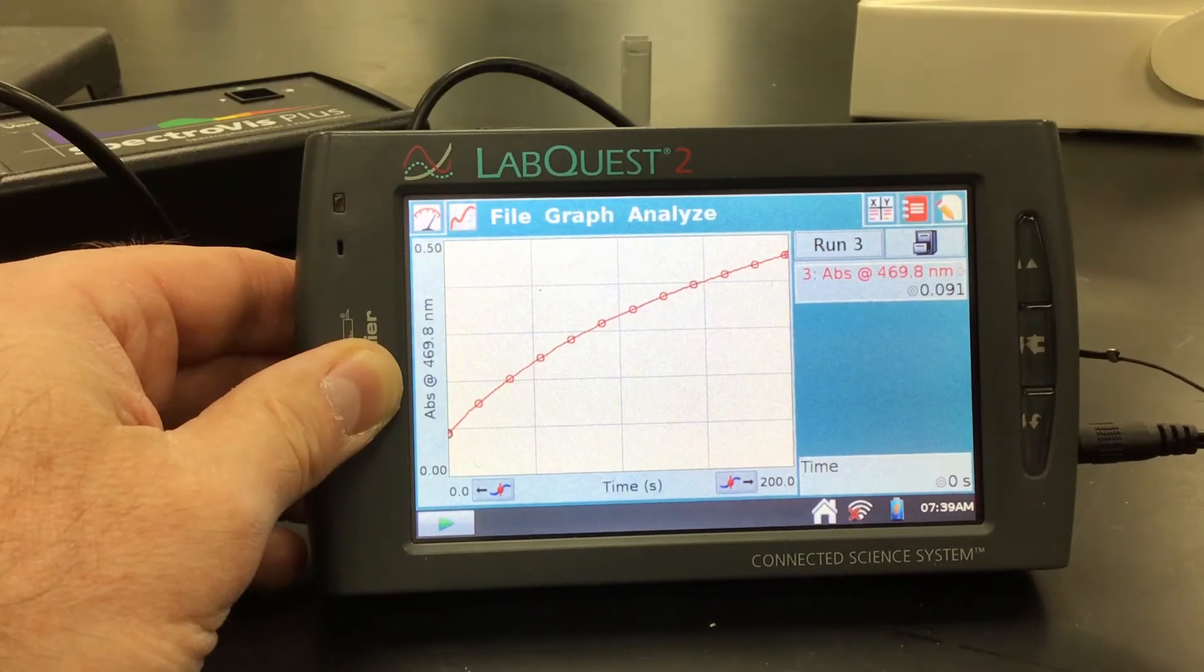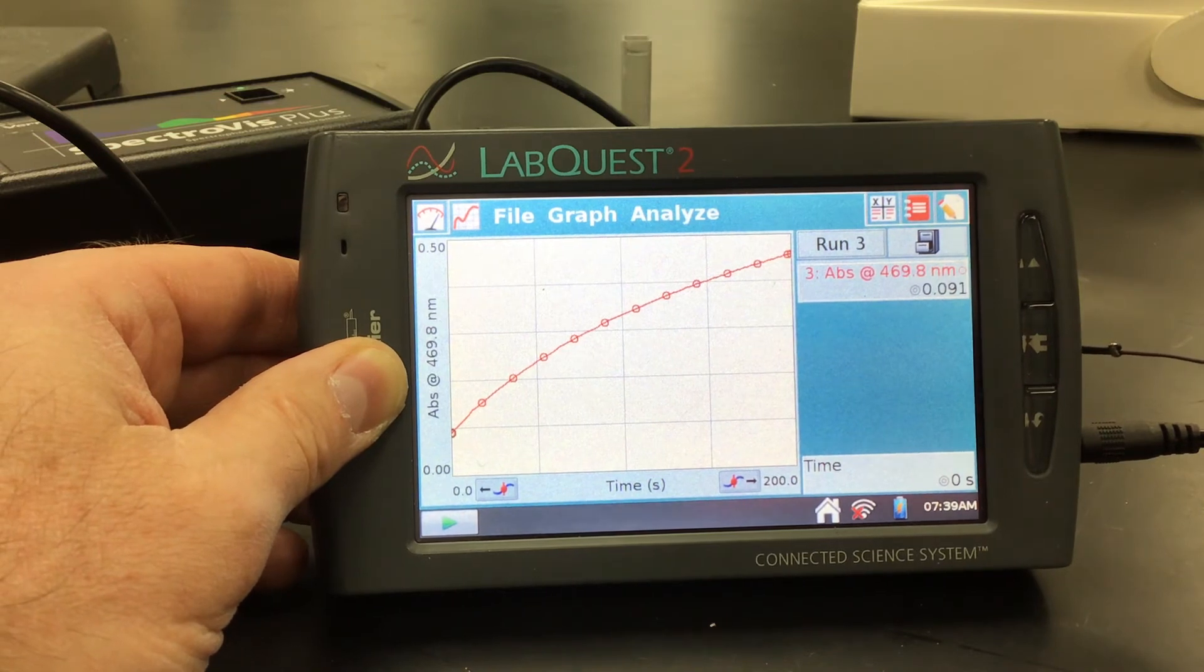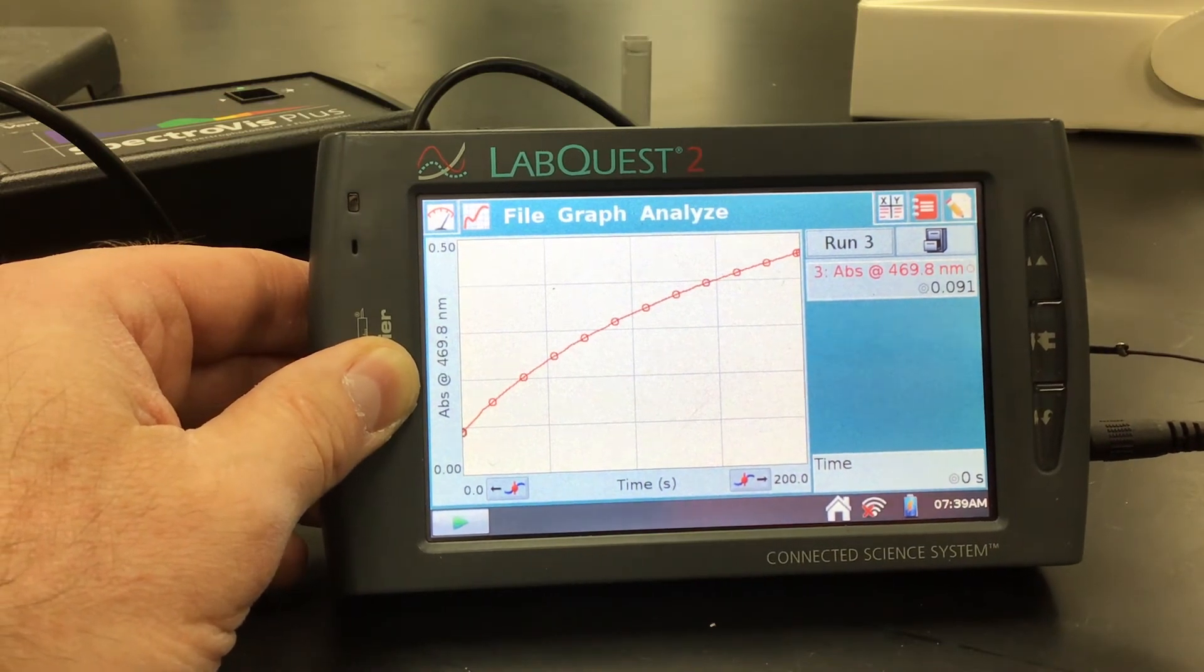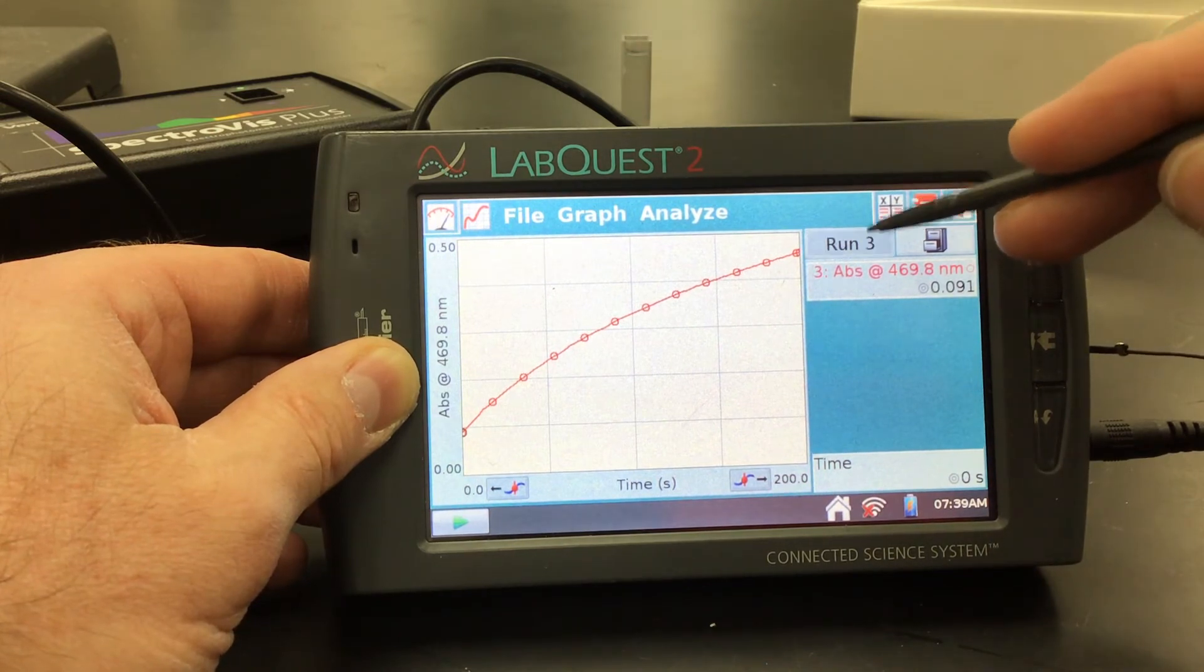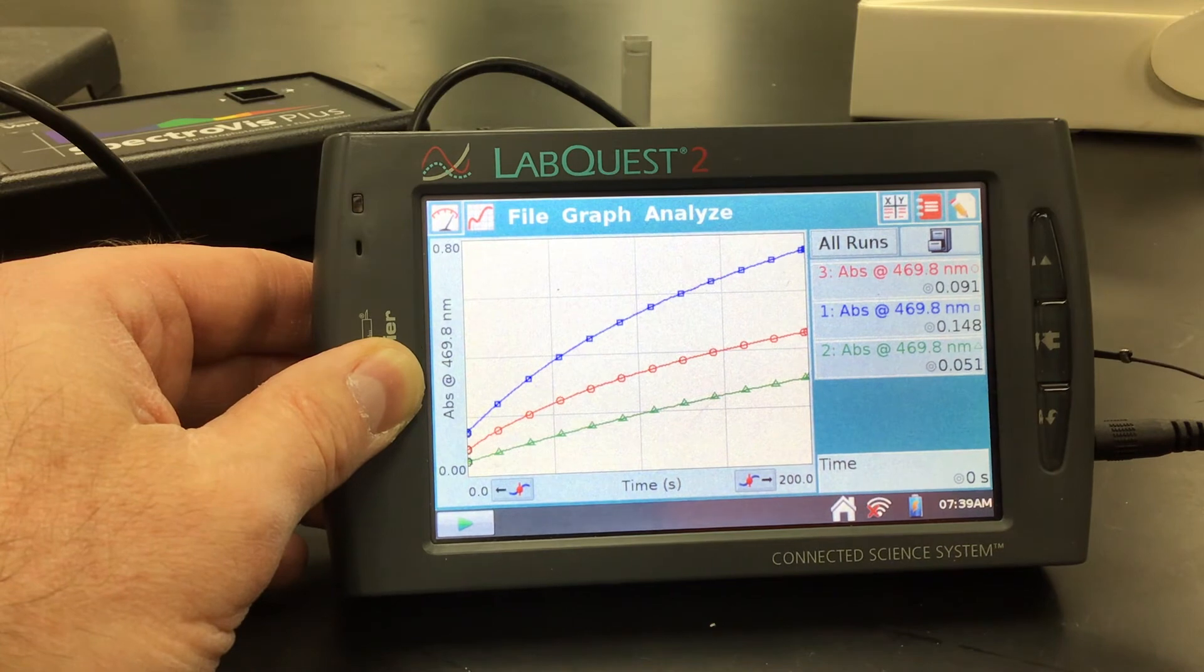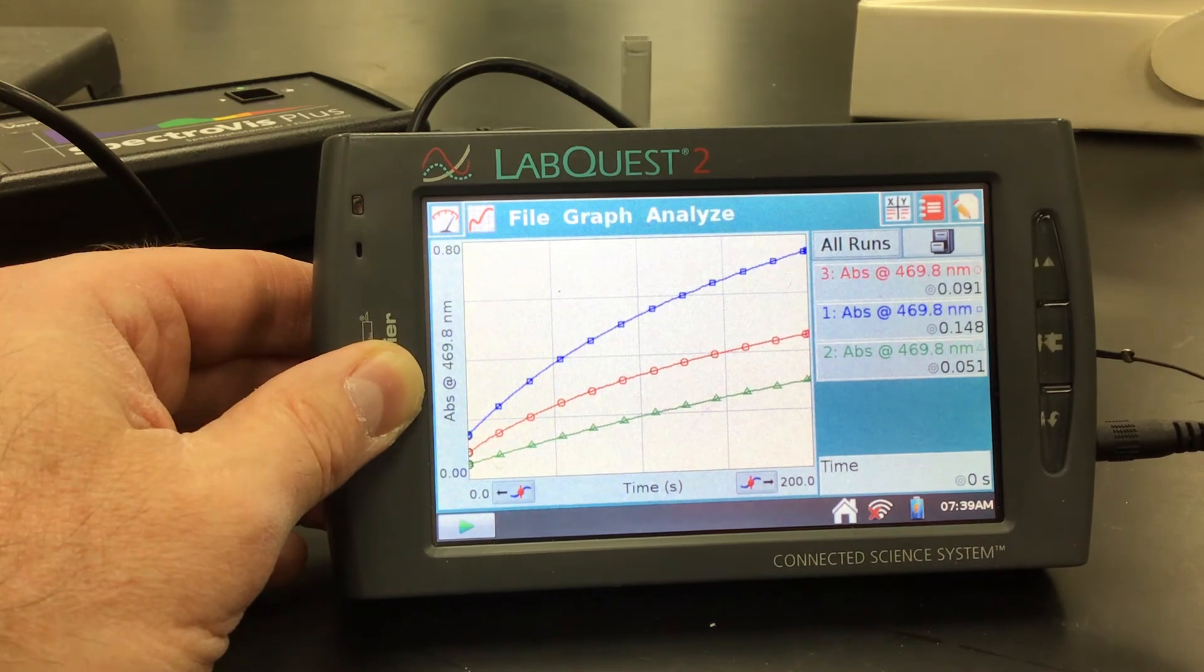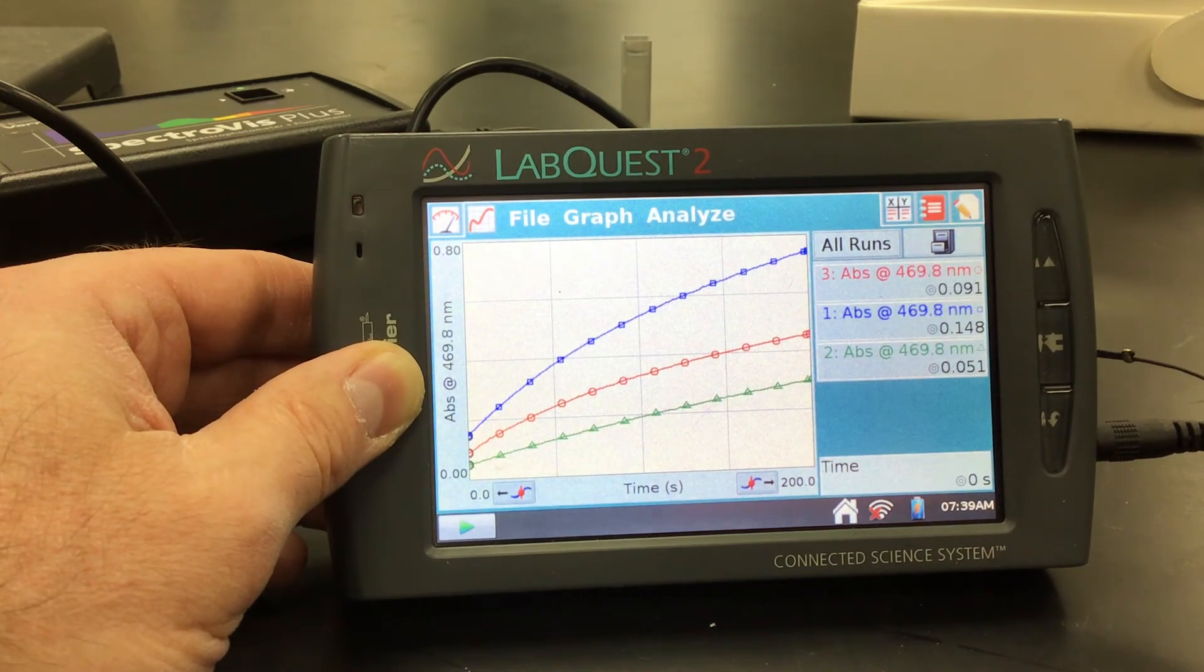All right, everybody. There's my third run, all done. And next what we're going to do is our analysis. So one thing that we can do to actually do all this is kind of show all three runs at the same time. And what we want to try to use and to look at is a linear portion of the graph that covers about 30 to 40 seconds of the reaction.